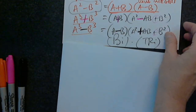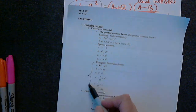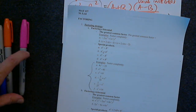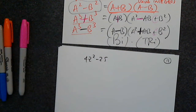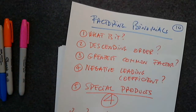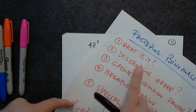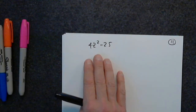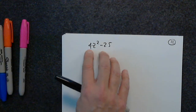That's it about the binomials. Now let's go to the other handout. Here are the examples for the binomial. Let's look at 4z² − 25. Skipping any of these steps will make your life more difficult. First question: what is it? It's a binomial. Is it in descending order? Yes. Does it have a greatest common factor? No — 4 and 25 don't have common factors. Is there a negative leading coefficient? No — the leading coefficient is 4, which is positive.